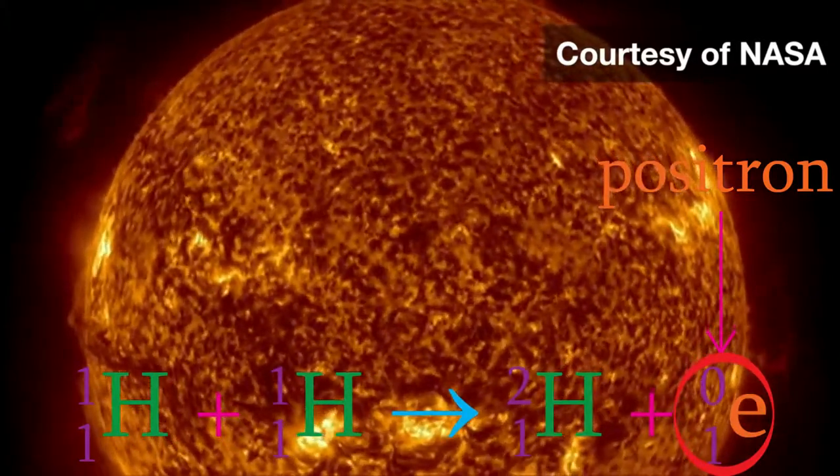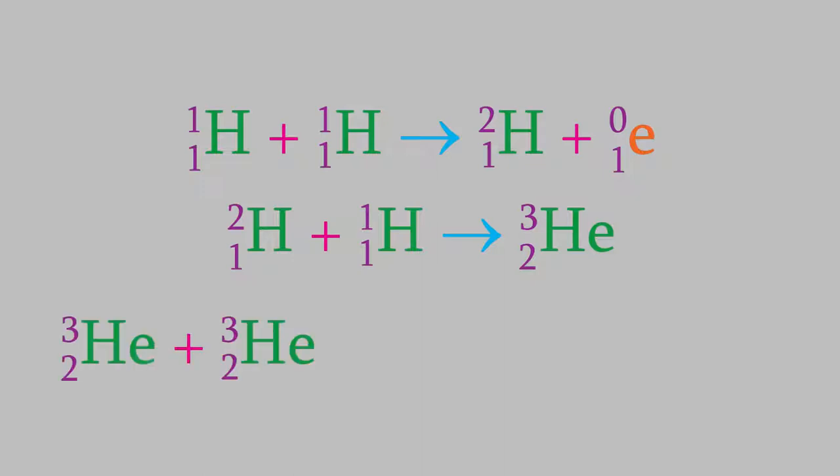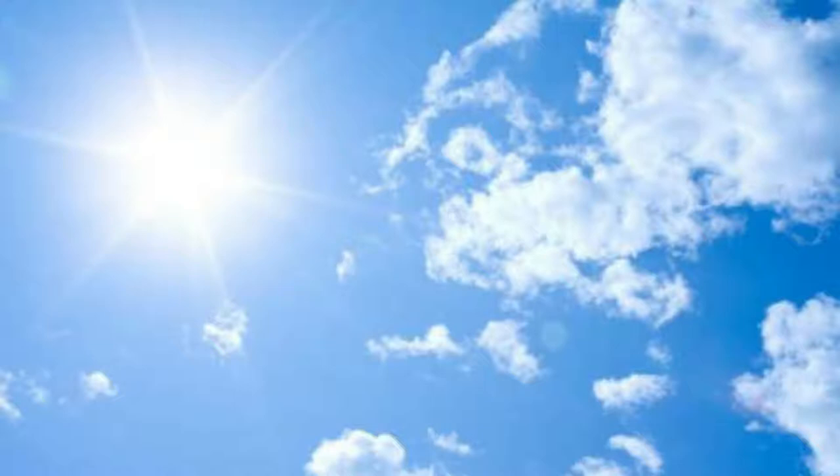The hydrogen-2 nucleus produced in this reaction can then undergo another fusion reaction, this one, in which it fuses with another hydrogen-1 to form a helium-3 nucleus. Finally, two helium-3 nuclei can react to form a helium-4 nucleus and two hydrogen-1 nuclei. All three of those reactions are occurring in the Sun right now, and you can see the result.